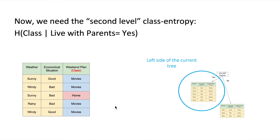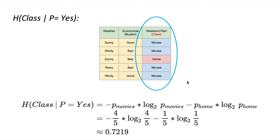Now we need the second-level class entropy for the left side of the tree — the case where live with parents is yes. We calculate the entropy of the class column again, but now with fewer rows since we've instantiated one variable. The proportions are four movies and one home, giving four divided by five and one divided by five. Applying the entropy formula, we obtain 0.7219.